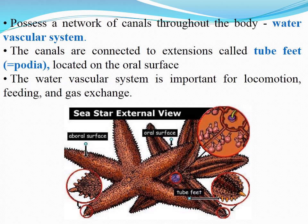Sexes are separate, with interradial gonads and separate ducts to the exterior. Fertilization is usually external. Development is indirect with different types of free-swimming larvae. The majority of echinoderms are capable of autonomy — self-mutilation — and subsequent regeneration.